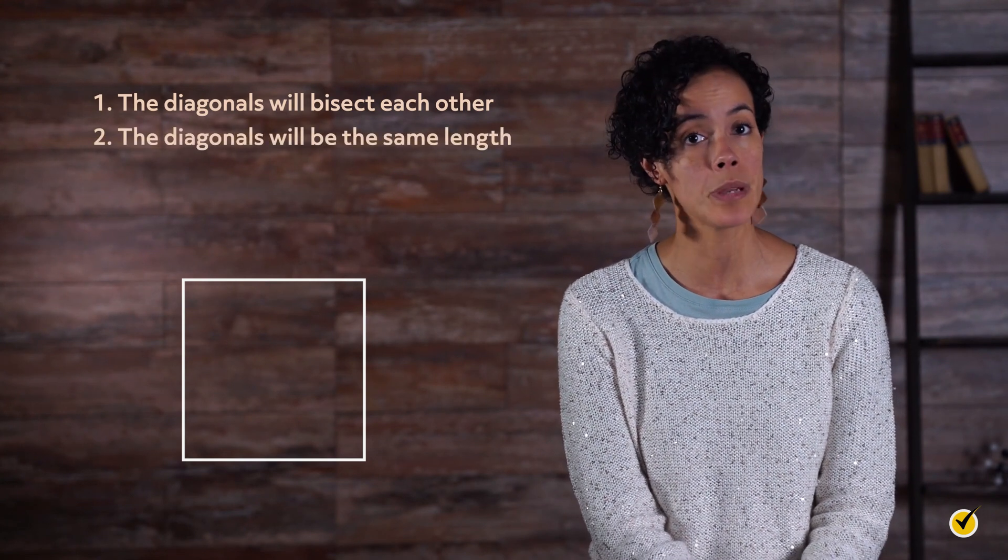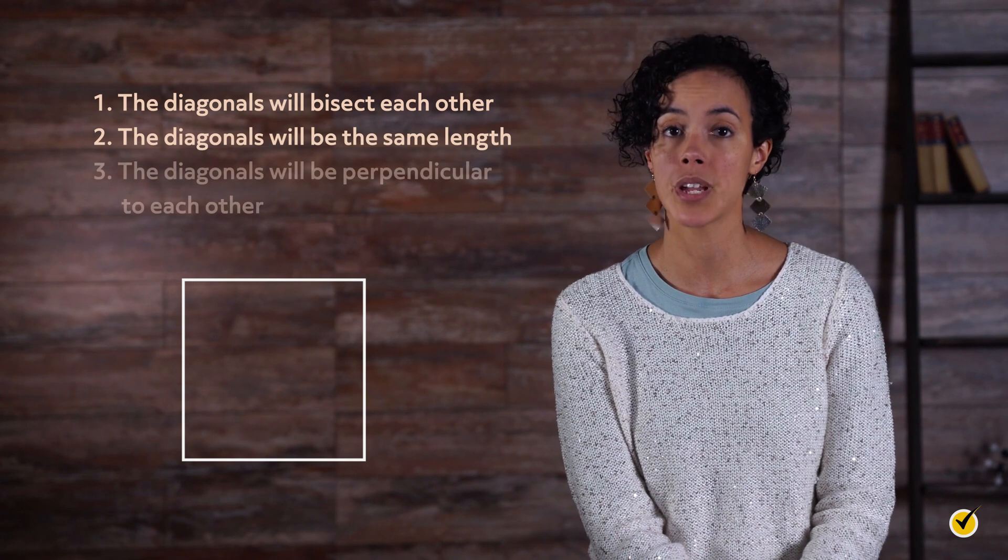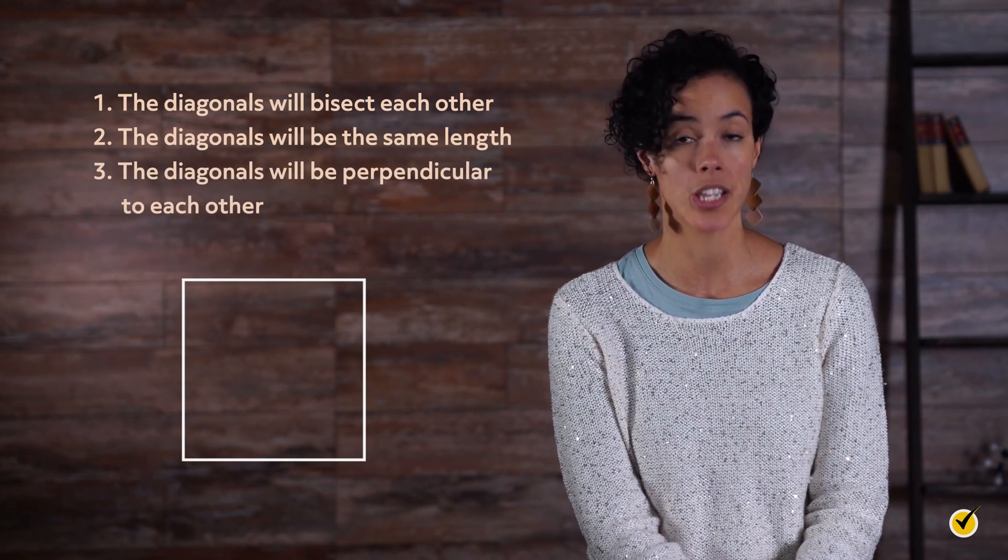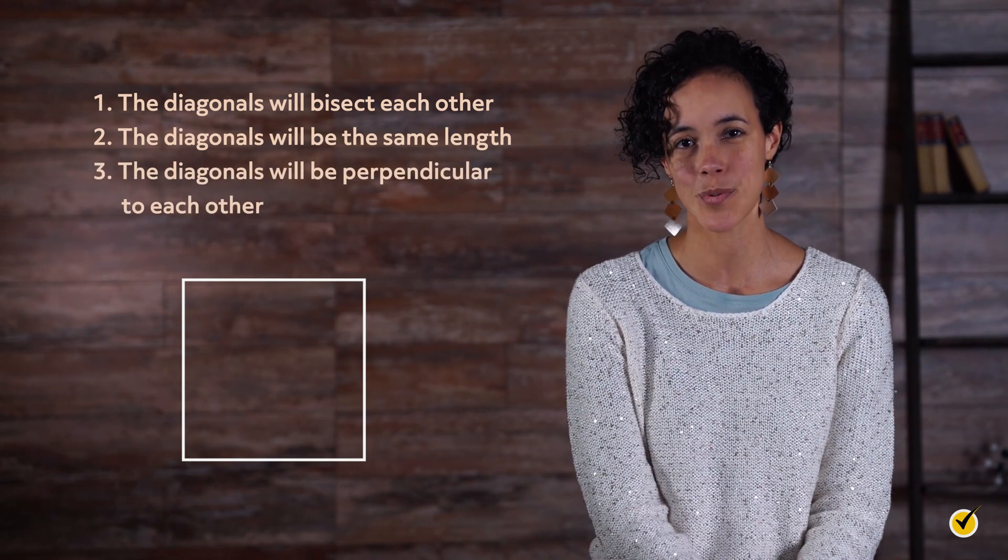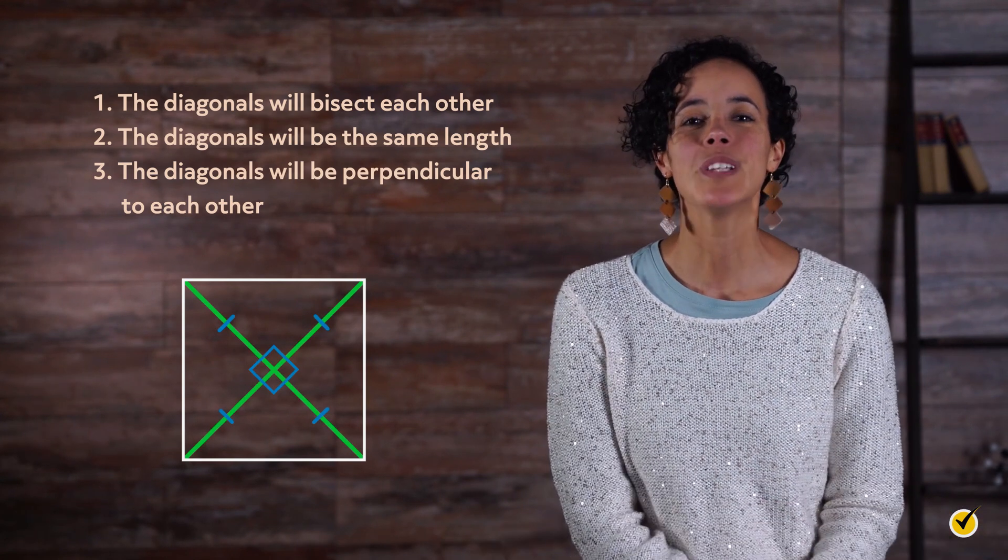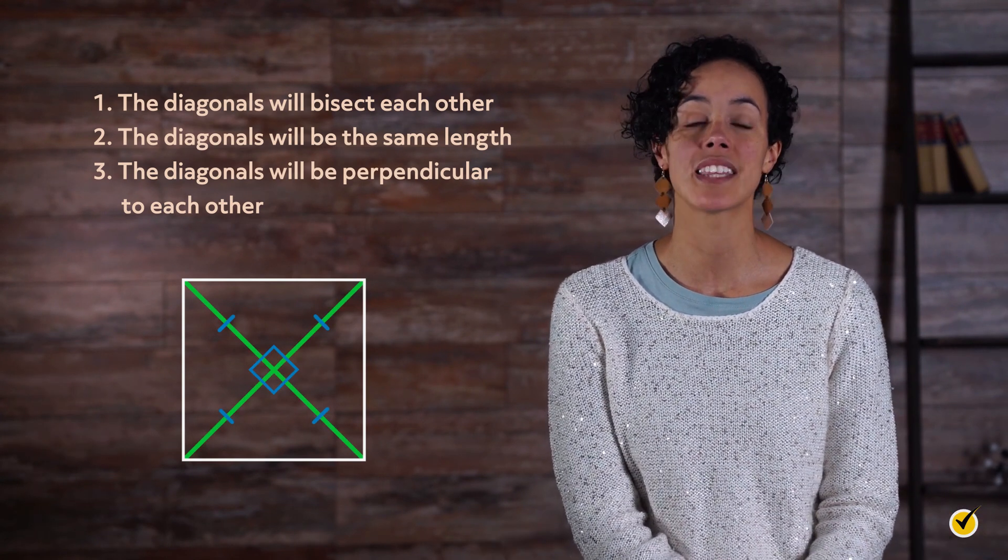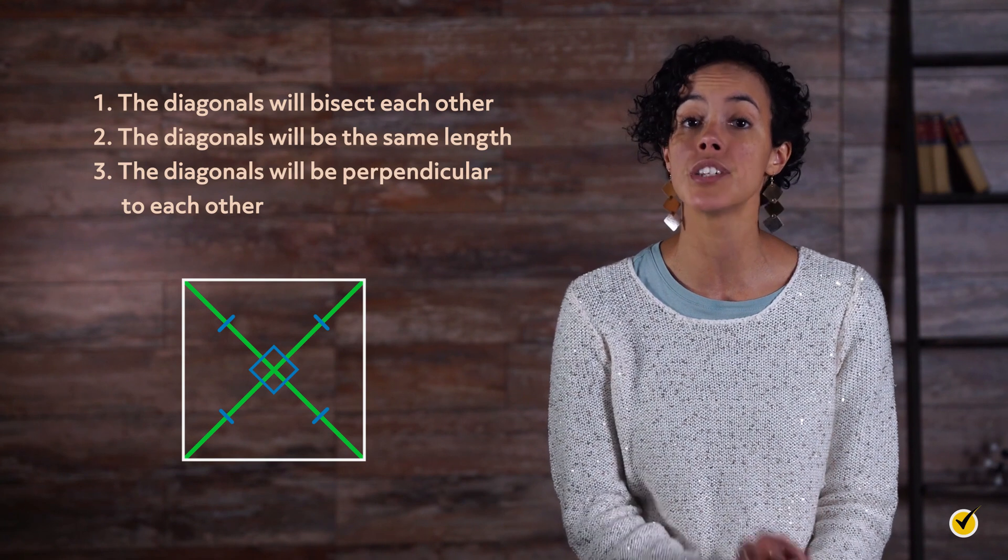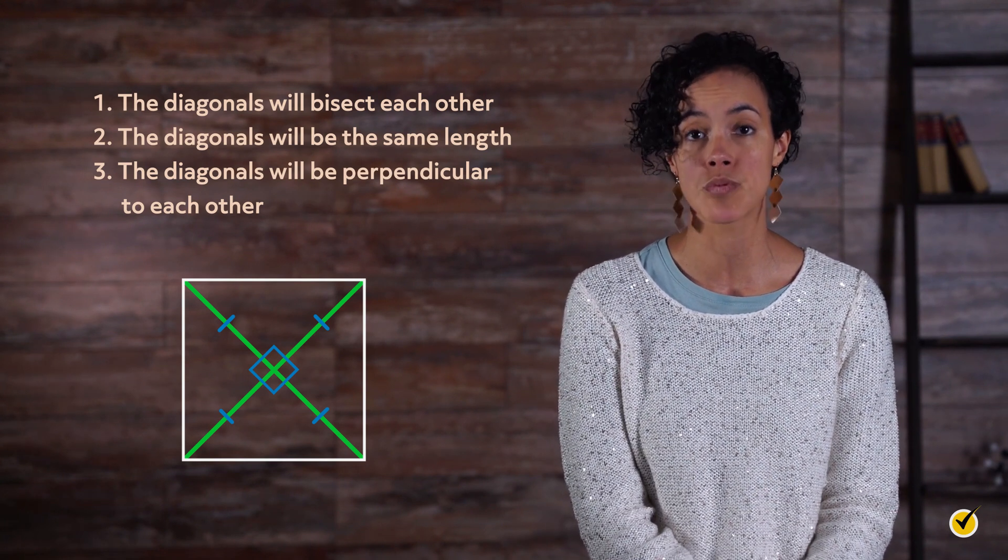Two, the diagonals will be the same length, and three, the diagonals will be perpendicular to each other. Let's see if we're right. We were right! If we look closely, we can also see that the two diagonals cut the square into four congruent isosceles right triangles.